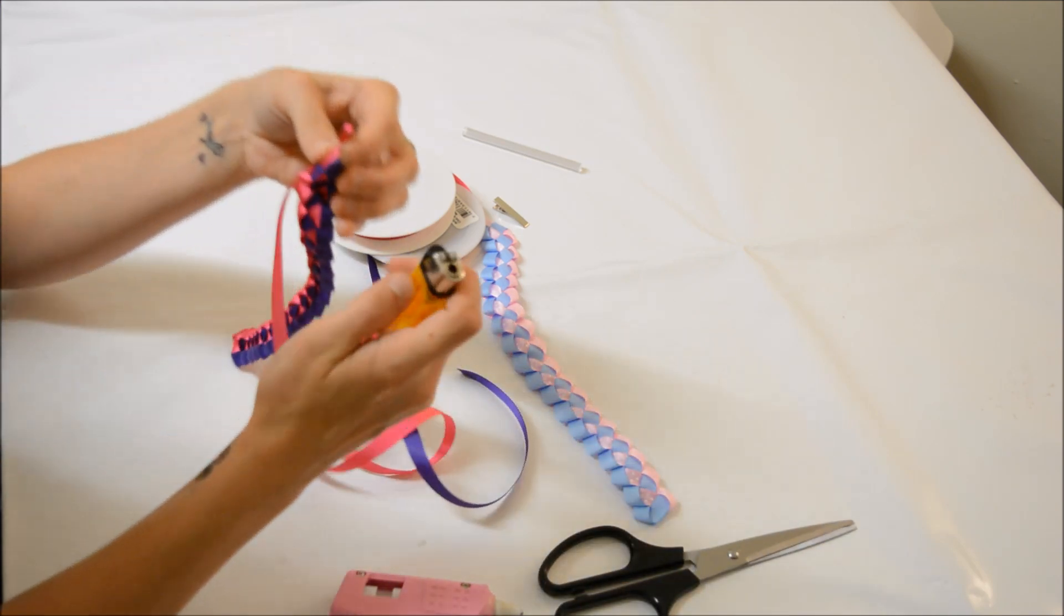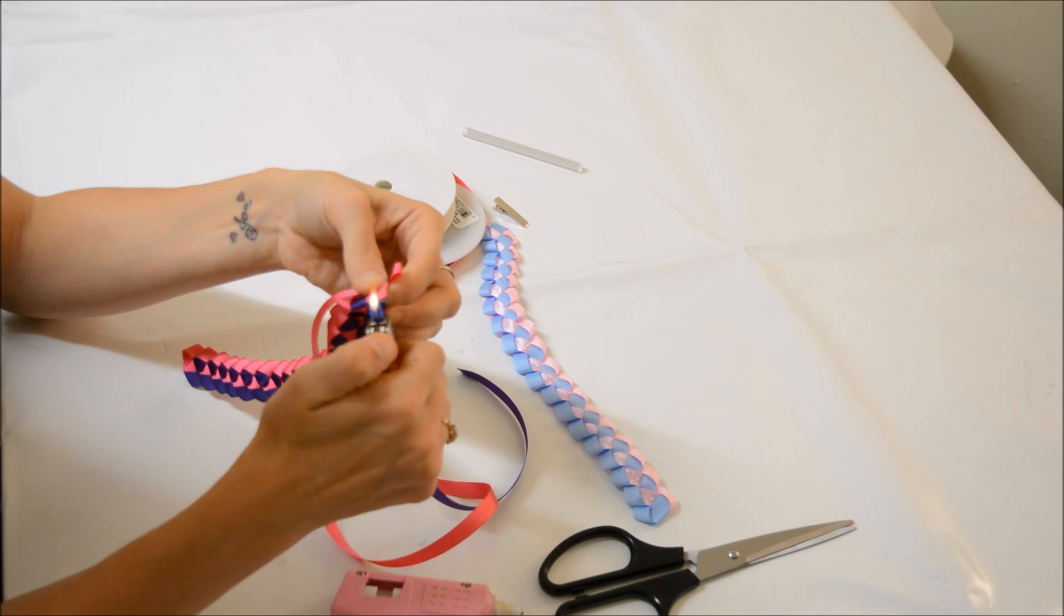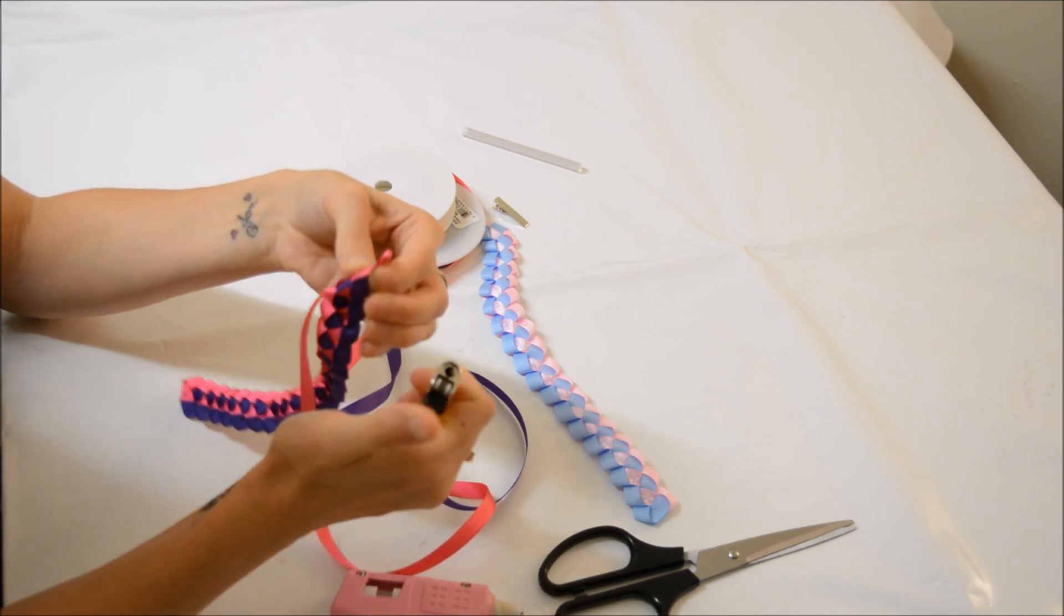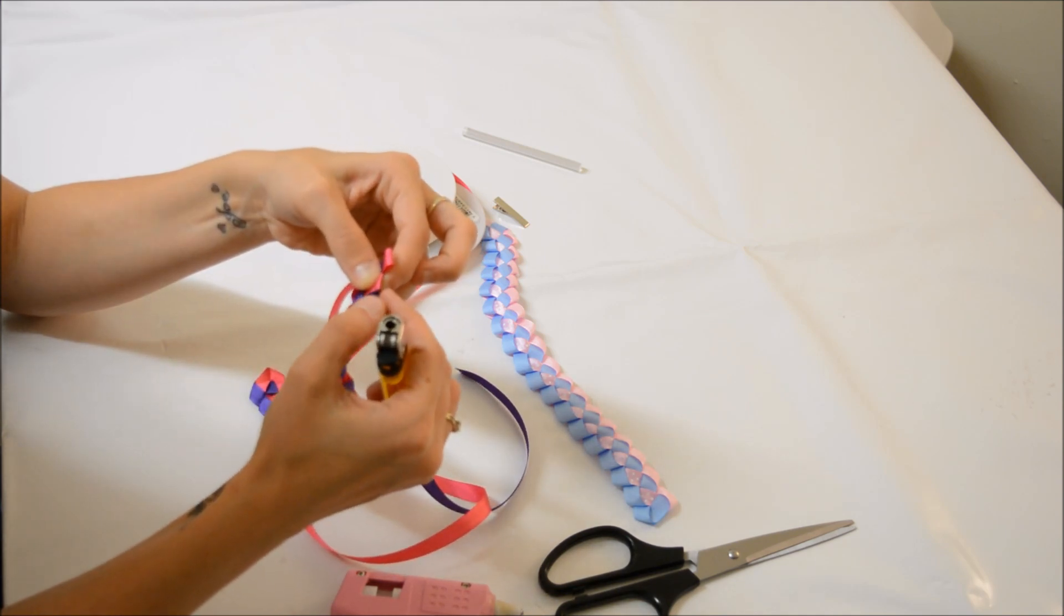Then you want to take your scissors and just snip off the excess. Now you can very carefully heat seal this, just so you don't get any fraying from that ribbon.